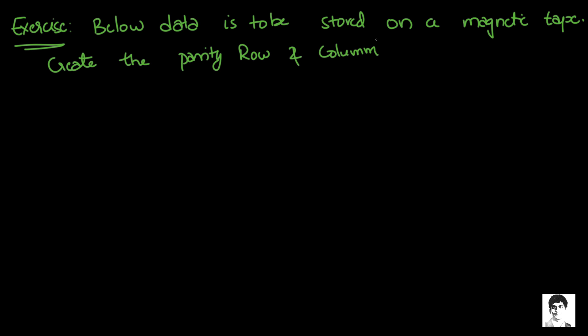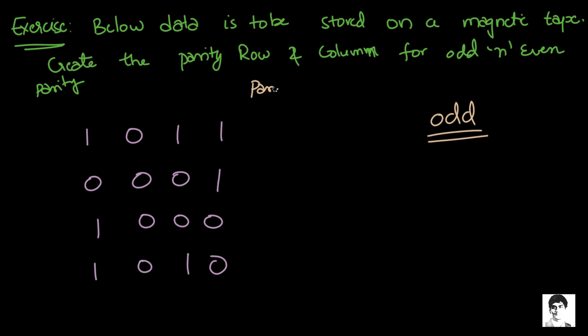Finally, let's wind up with a couple of exercises. So in the first one, there is some data that is supposed to be stored on a magnetic tape. We are supposed to create the parity row and the parity column for both even and odd parity. Let's begin by building the parity block for odd parity.